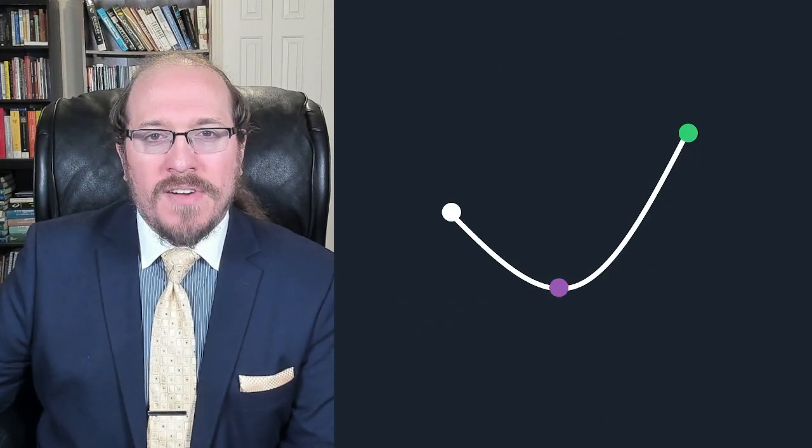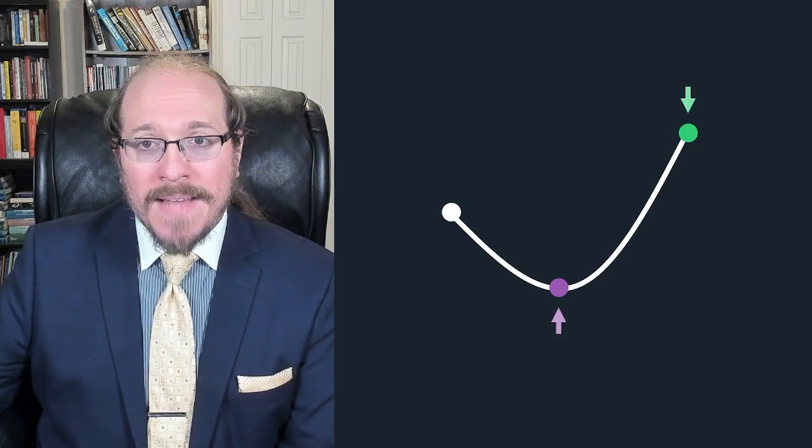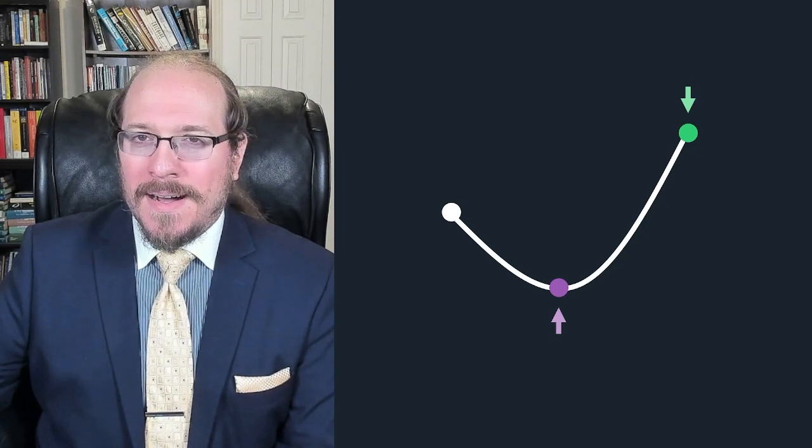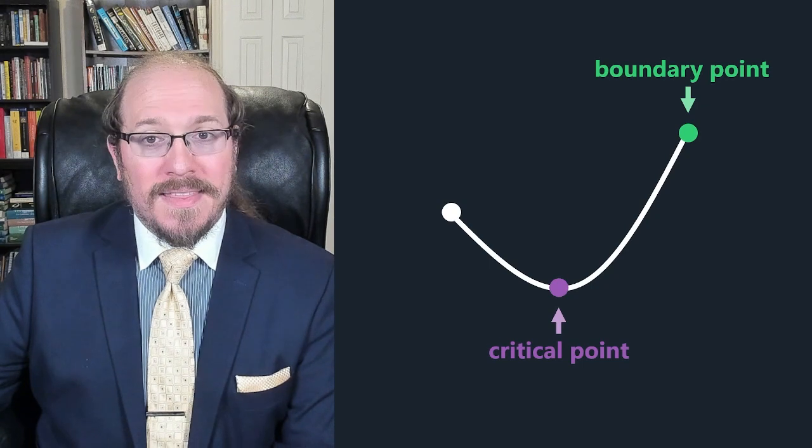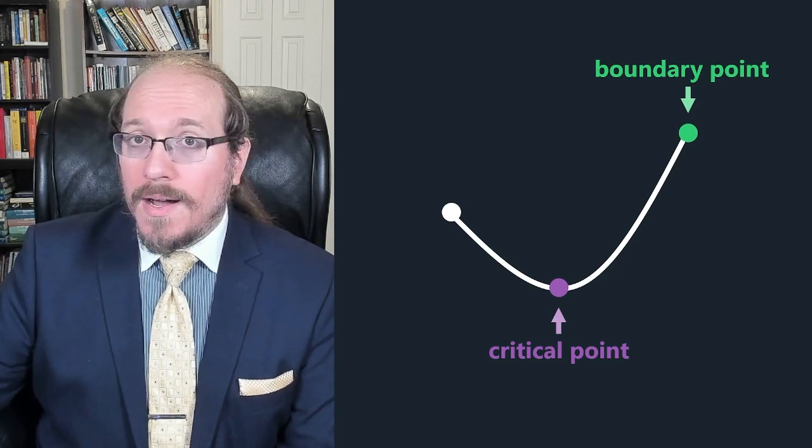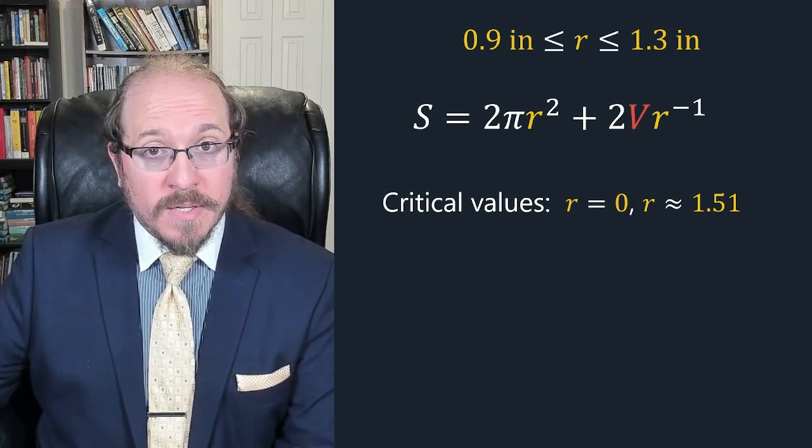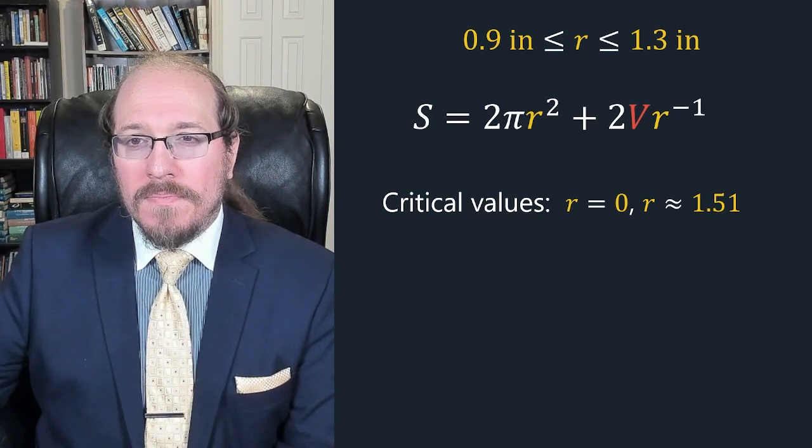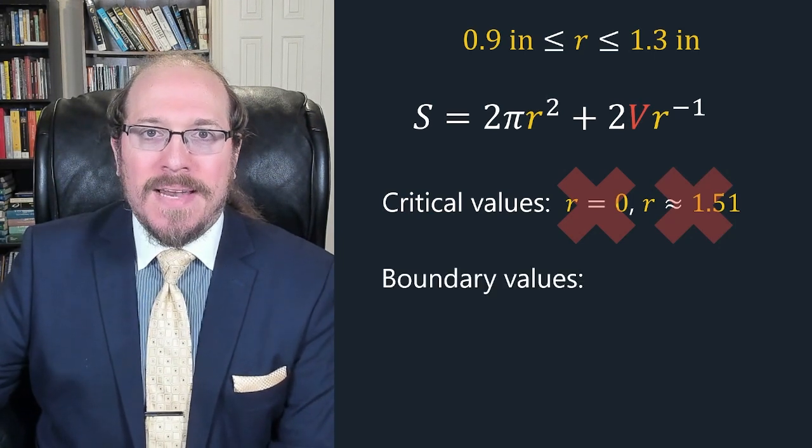How do we use this new information? Well, the good news is as long as our function is nice enough. Specifically as long as it's continuous on that closed interval. It's guaranteed to reach a maximum and a minimum. The bad news though is that it may not happen at a critical point like the minimum in this picture. Instead, it may happen at a boundary point like this maximum. But the maximum and minimum will always happen at either a critical point or a boundary point. In this case, we assume that the radius has to be between 0.9 inches and 1.3 inches inclusive. When we were looking at surface area earlier, we already found that the critical values were r equals 0 and r is about 1.51. But both of these are outside that range. So we know the minimum surface area won't happen at a critical point. It must happen at a boundary point.